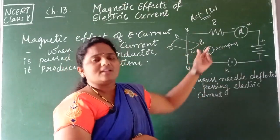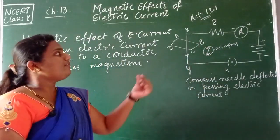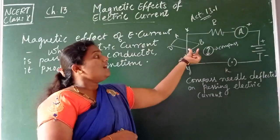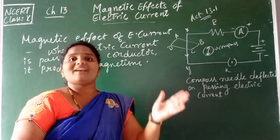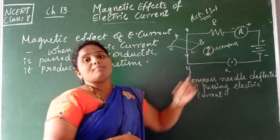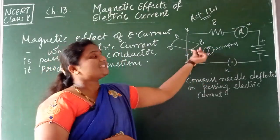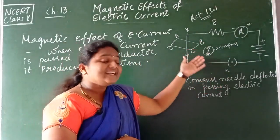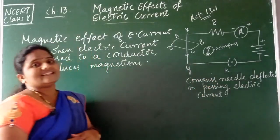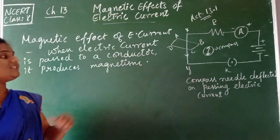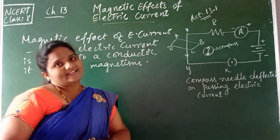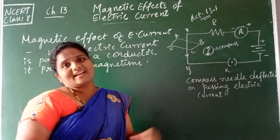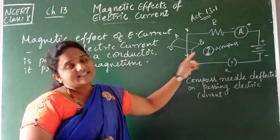When current starts flowing, magnetism is produced. To know whether magnetism has been produced or not, we bring a compass near the wire. When we bring the compass near, the compass needle starts deflecting — either right or left. By observing the deflection of the compass needle, we can conclude that magnetism exists there, due to the flow of electric current in the conductor.